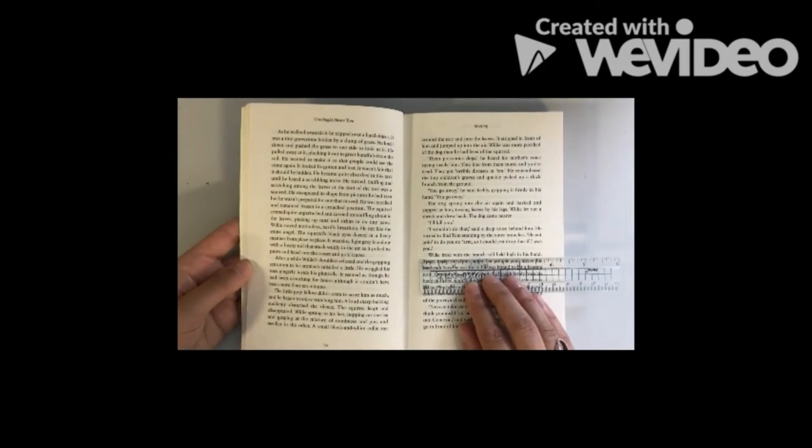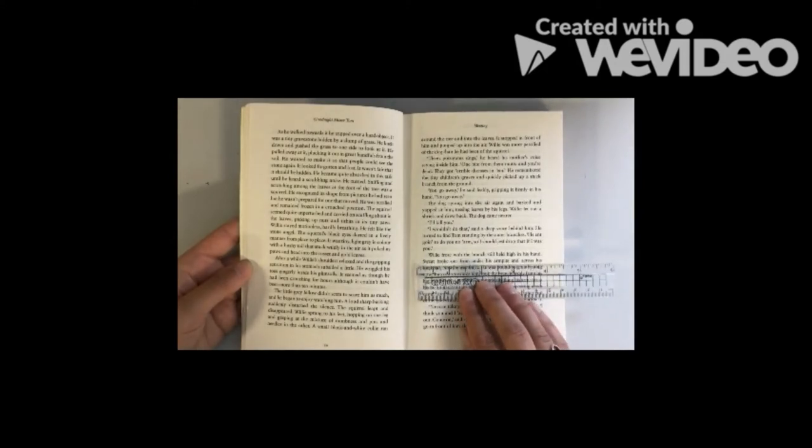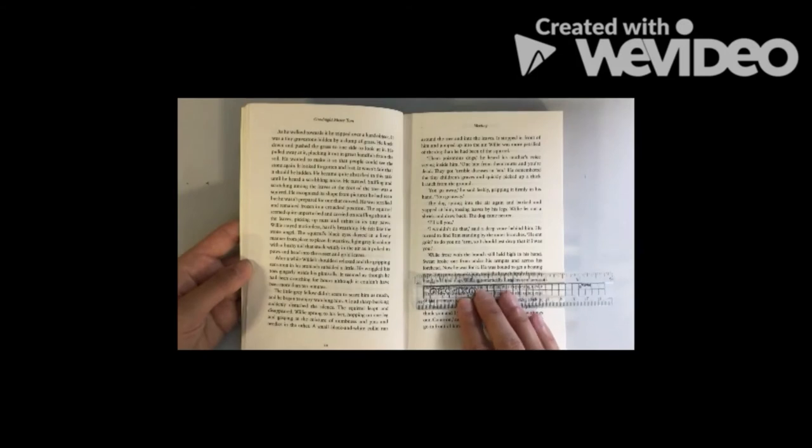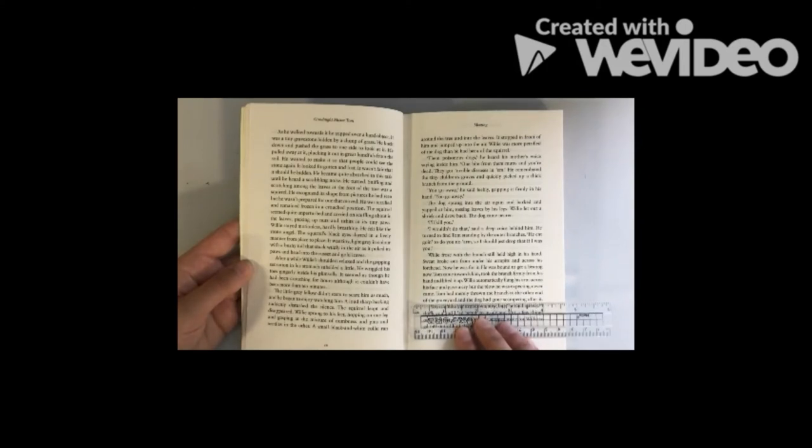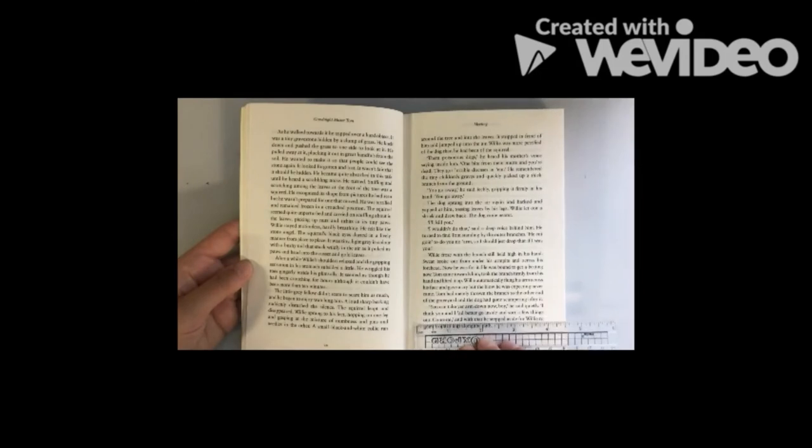He turned to find Tom standing by the outer branches. He ain't gonna do you no arm, so I should just drop that if I was you. Willie froze with the branch still held high in his hand. Sweat broke out from under his armpits and across his forehead. Now he was for it. Tom came towards him, took the branch firmly from his hand and lifted it up. Willie automatically flung his arms across his face and gave a cry. But the blow he was expecting never came. Tom had merely thrown the branch to the other end of the graveyard.